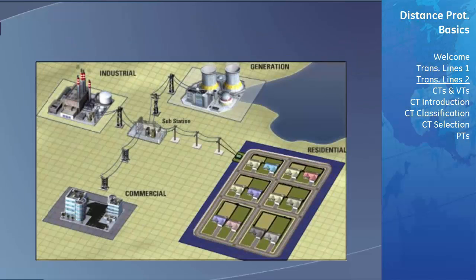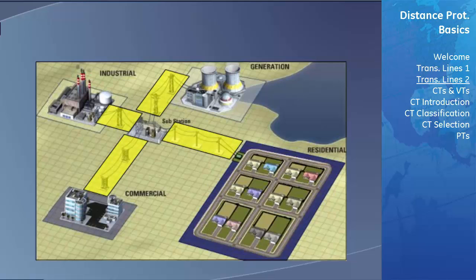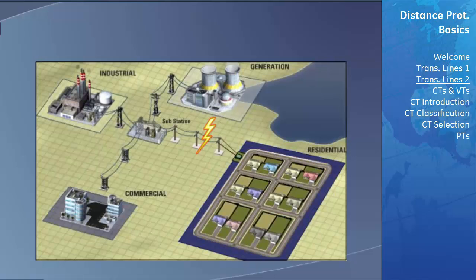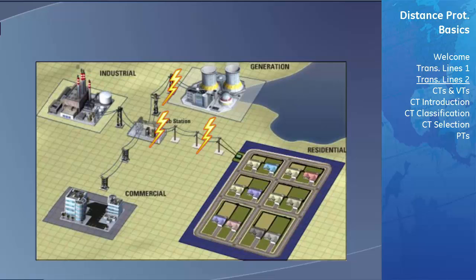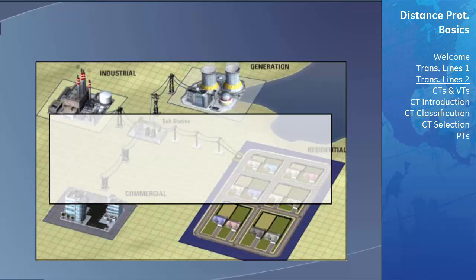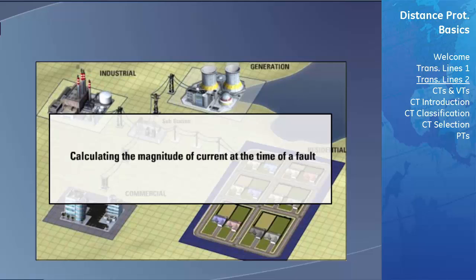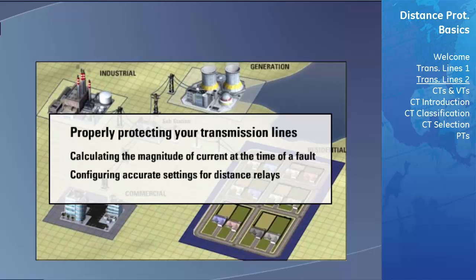The importance of transmission lines in a power system is quite evident. They are responsible for transmitting large amounts of current at possibly very high voltages. If a fault occurs on a transmission line and it is not cleared properly and quickly, the stability of the entire system can be compromised. The longer the fault is allowed to remain on the line, the higher the possibility that the system will become unstable and possibly collapse. Calculating the magnitude of fault current and configuring accurate settings for distance relays is very important in properly protecting your transmission lines.